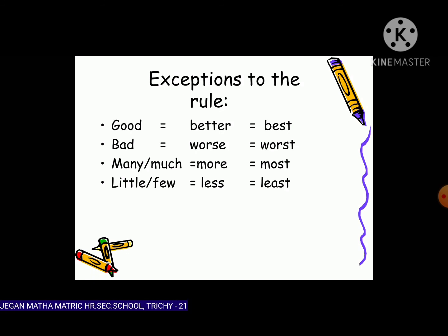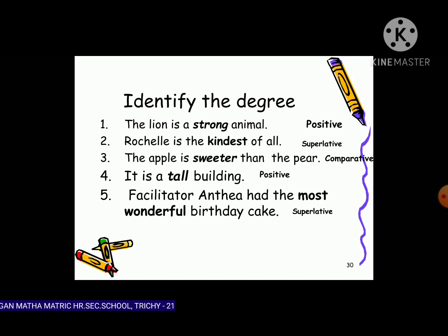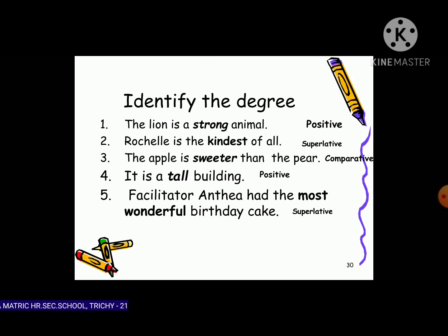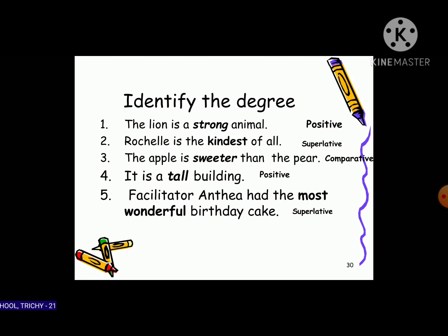Now, identify the degree in each sentence. 'The lion is a strong animal' — strong is an adjective, so that is positive degree. 'Rochelle is the kindest of all' — kindest has -est, so that is superlative. 'The apple is sweeter than the pear' — sweeter is comparative. 'It is a tall building' — tall is positive. 'Anthea had the most wonderful birthday cake' — most wonderful is superlative.